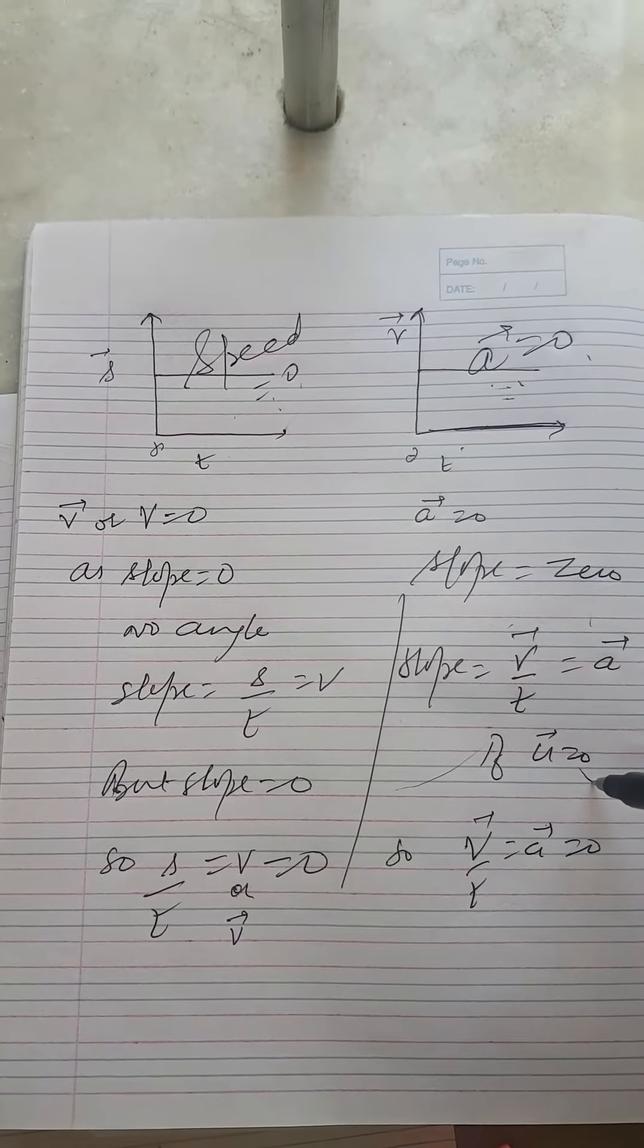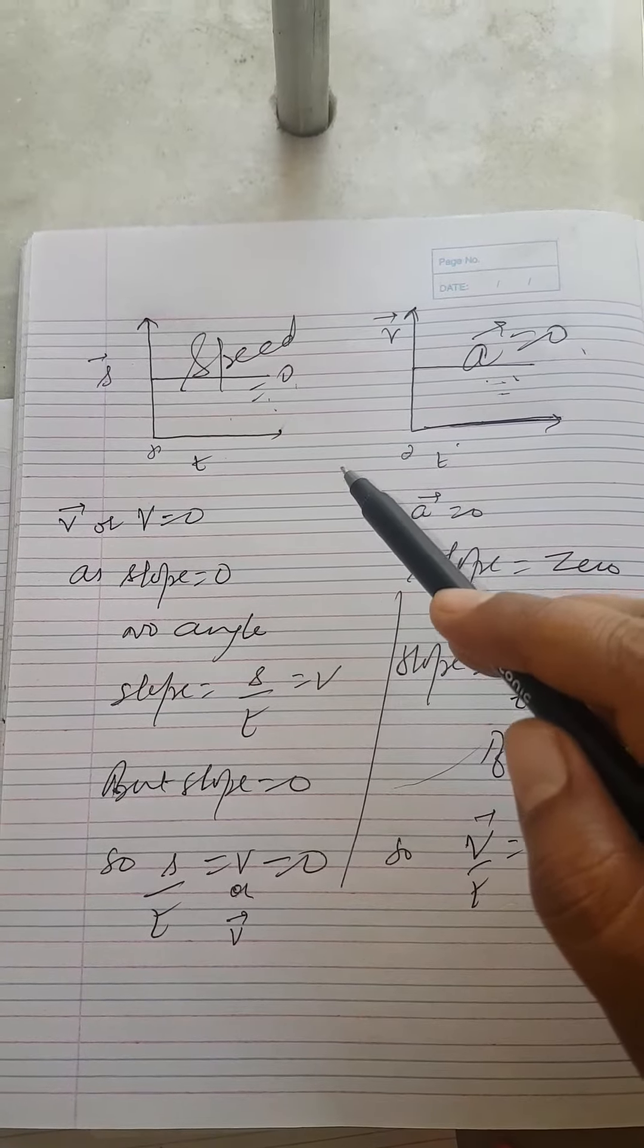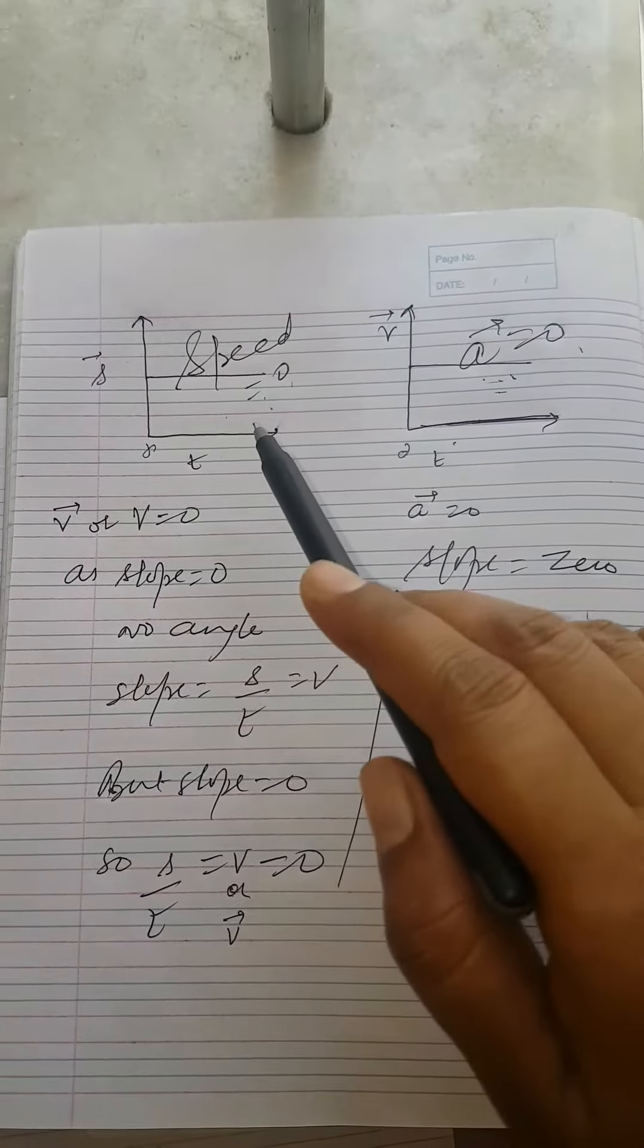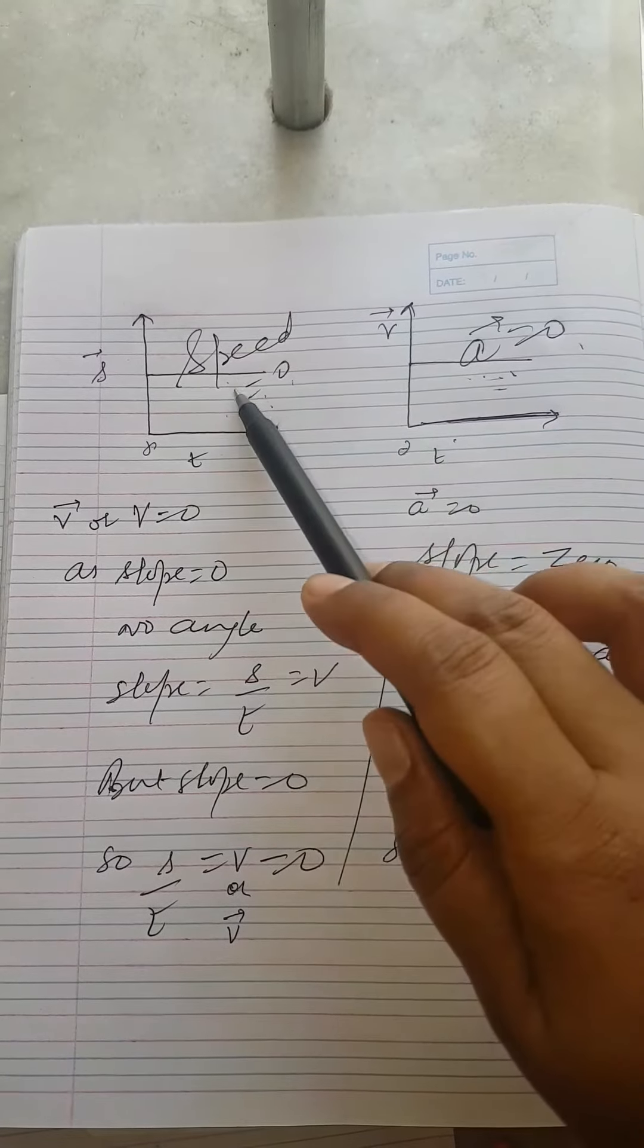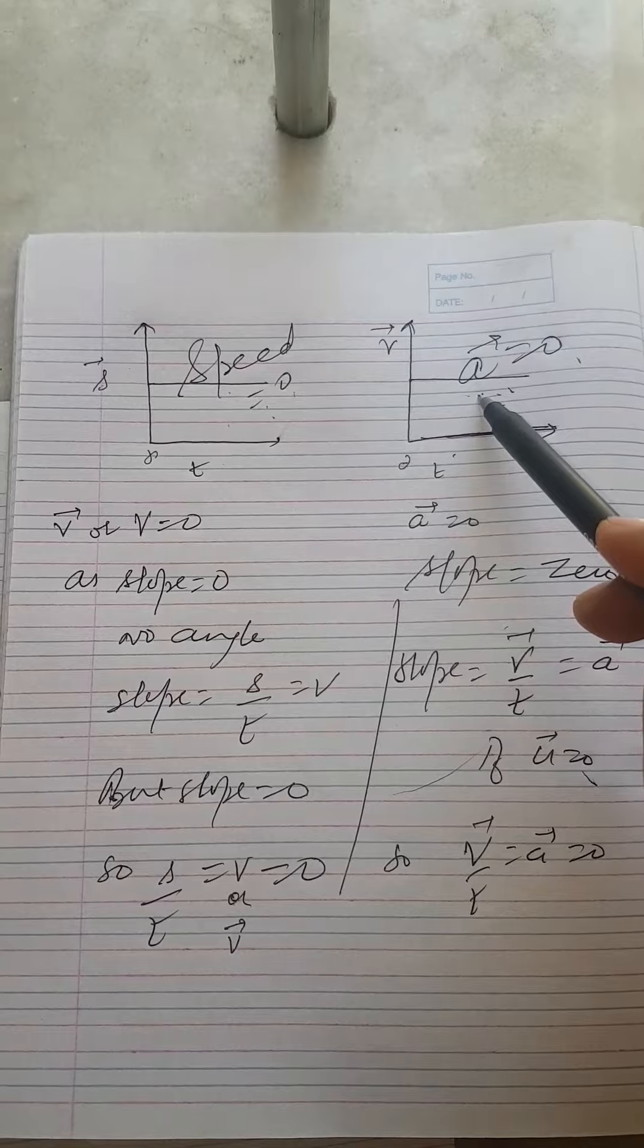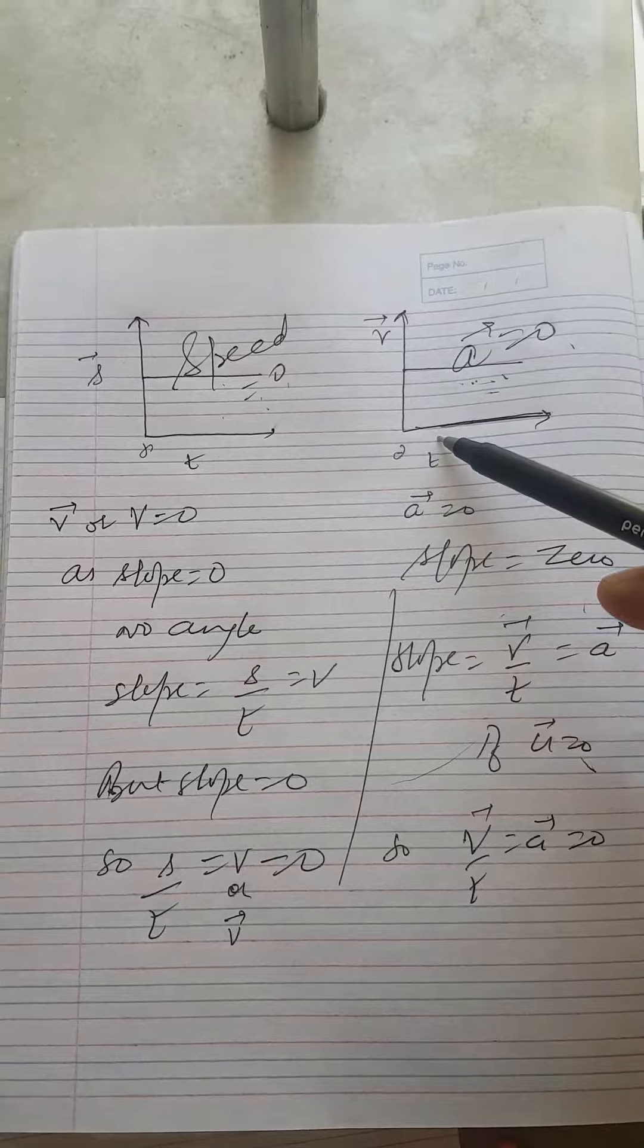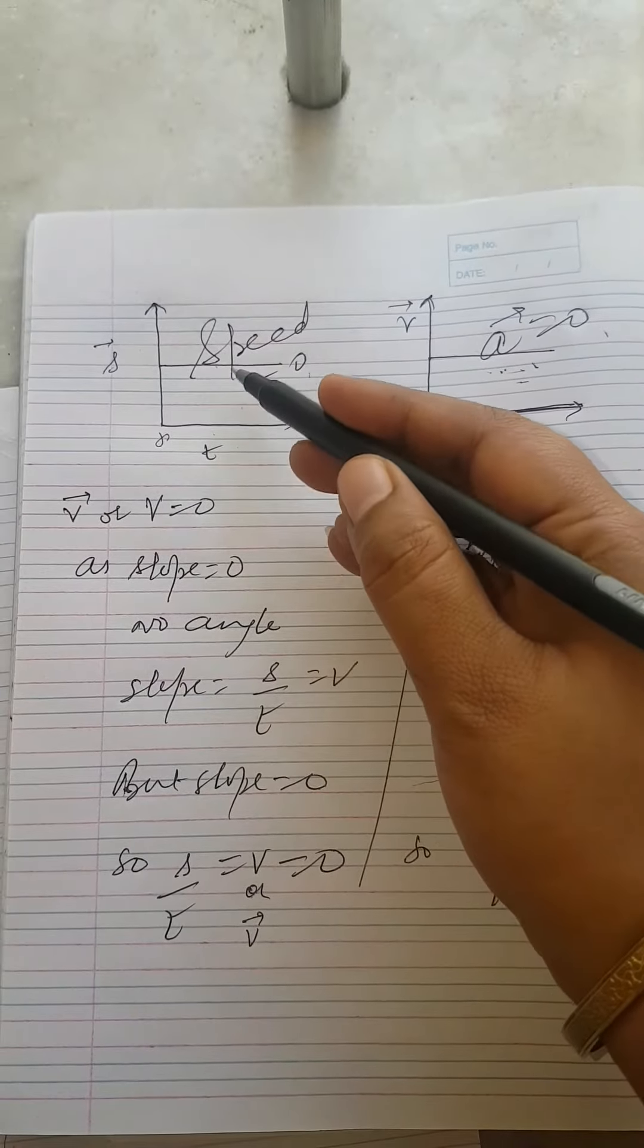Now you have understood that slope is the inclination of the line, of the graphical line, with respect to x-axis. Now you can easily see that these two lines are parallel to x-axis, that is they are not at all inclined. This is not x-axis, rather they are parallel to x-axis. So in these two lines there is no angle because they are parallel lines.